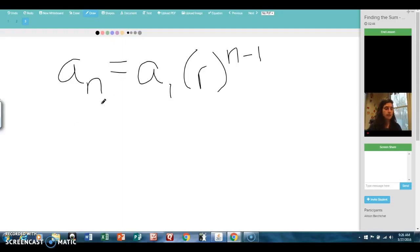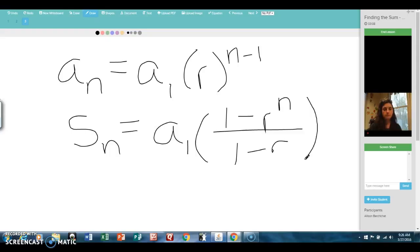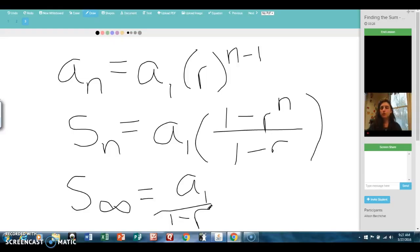And let's take a look at the sum formulas. We are going to have the sum for any finite number of terms, 1 minus r to the n over 1 minus r. And then when r is a fraction, we can find an infinite number of terms. It's just a1 over 1 minus r. Here we go.